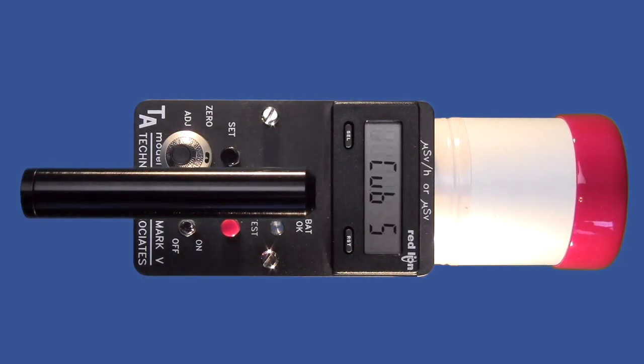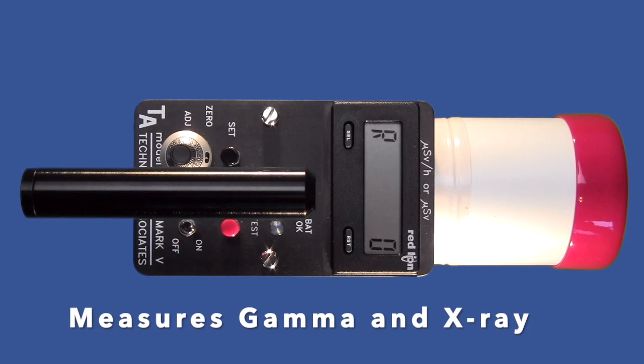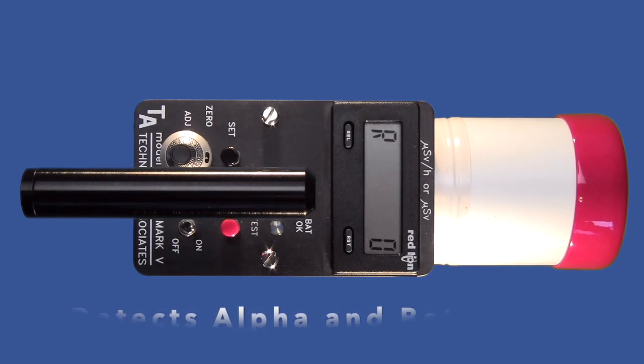This is a demonstration of the TBM IC Mk5 ion chamber, which measures gamma and x-ray radiation. It detects alpha and beta radiation as well.